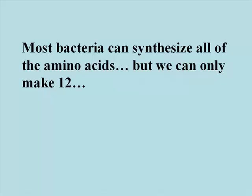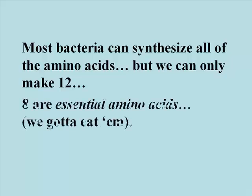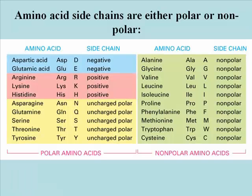Many organisms, especially bacteria, can synthesize most of the 20 amino acids, if not all of them, from precursors. But for humans, 8 of the amino acids are essential dietary components — we have to eat them. Here's a table of amino acids emphasizing the essential properties of the R groups, which can either gain or lose protons, or be polar, or be non-polar. The R groups, of course, account for the different chemical properties of each of the different amino acids.